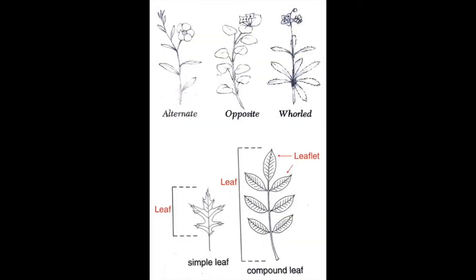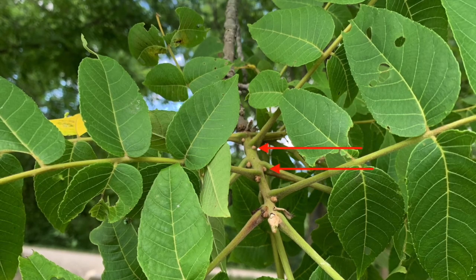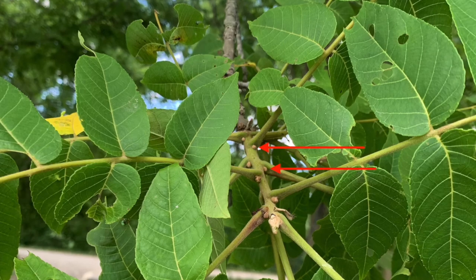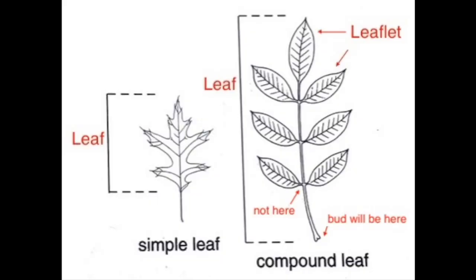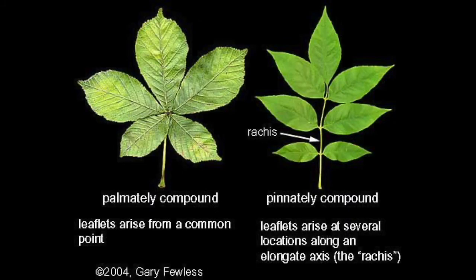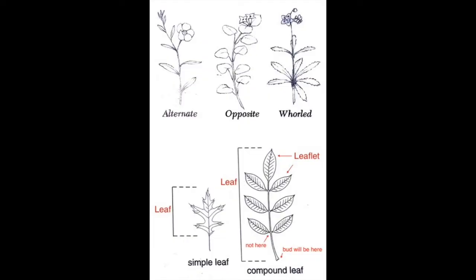The way to tell them apart is by looking at what is attached to the woody twig. You can also tell by looking at the buds, which will always be on the main twig, never on the leaf stalk. Also note that compound leaves can be palmate or pinnate-like. It is important to know what is a leaf and what is a leaflet when determining the leaf arrangement as alternate, opposite, or whorled.